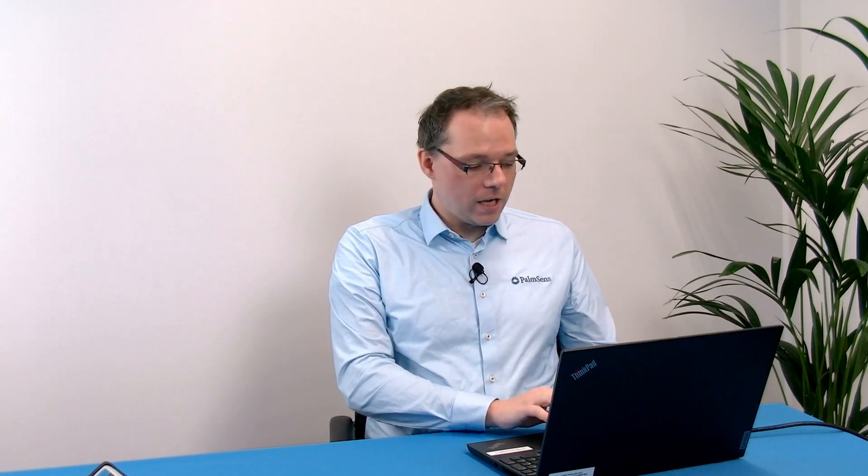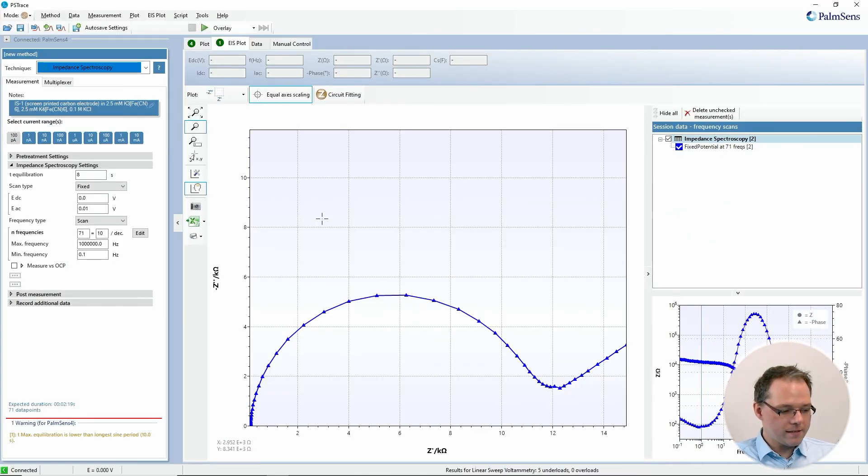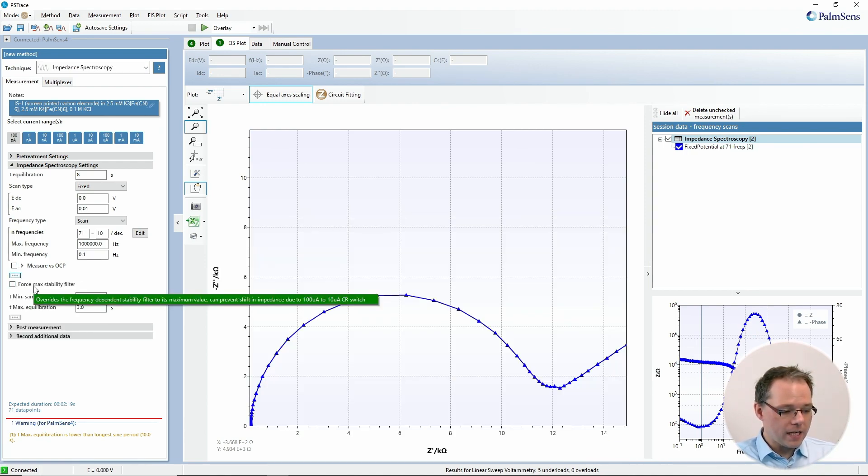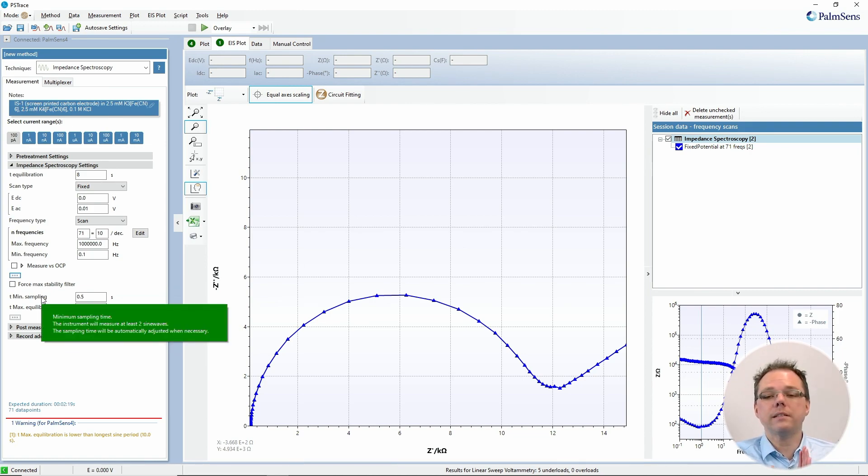Let's have a look at the advanced parameters in PSTrace. There's a special filter that you can activate if you see jumps when you have a current range switch between the 100 microampere and the 10 microampere current range. You can also set the minimum sampling times. At very high frequencies you get very quickly a lot of sine waves and a measurement point is quickly done. If you have a noisy environment and need more waves, you can tell the software for each point at least you need to sample this amount of time.